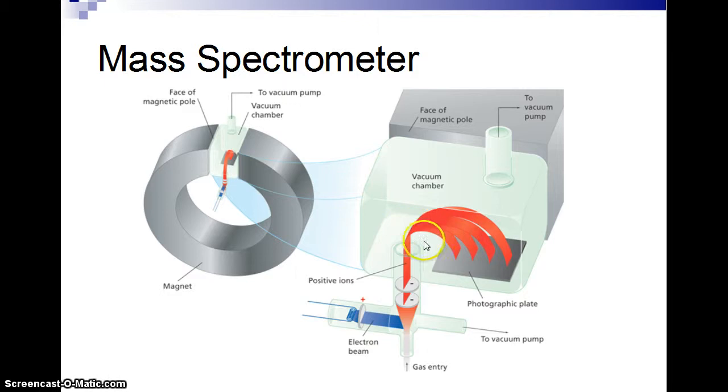But depending on the mass, heavier objects are going to be deflected less, so they'll move farther away. Lighter objects will be moved closer by looking. And so if you look at where the objects land, you can figure out their mass.